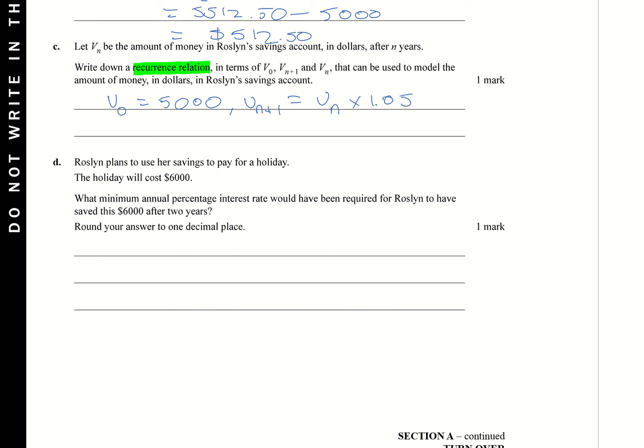So D, let's have a look at D. Her plan is to use her savings to pay for a birthday, holiday costs $6,000. What's the minimum annual percentage rate would have been required for Roslyn to have saved $6,000 after two years? So this is not using any of the terms we used in the previous part of the question. Okay. And just keep in mind, this is not a recurrence. Not a recurrence problem. All right. Not a recurrence.